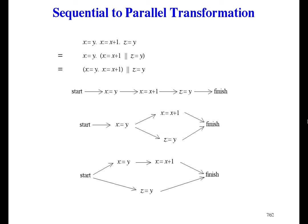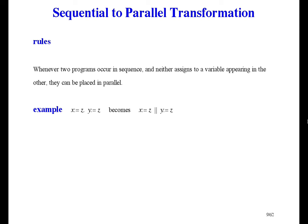This transformation can be done automatically, so here are the rules. Whenever two programs occur in sequence, and neither assigns to a variable appearing in the other, they can be placed in parallel. For example, x gets z, followed by y gets z. The first assigns to x, and there's no x in the second. The second assigns to y, and there's no y in the first. So put them in parallel. It doesn't matter that z appears in both because it's not being assigned to.